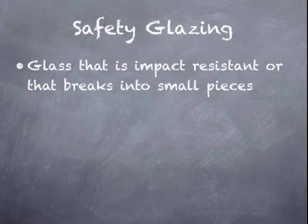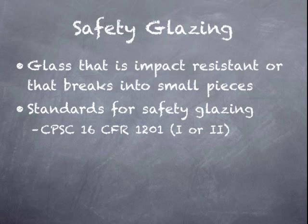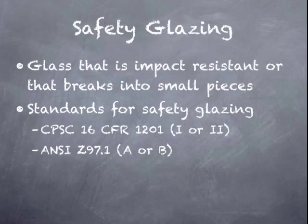So what is safety glazing? Essentially, it's glass that is impact resistant, or that breaks up into small pieces when impacted. There are test standards for safety glazing. One of them is from the Consumer Product Safety Commission, with a Category 1 or 2. And another test standard is from ANSI, with a Category A or B.